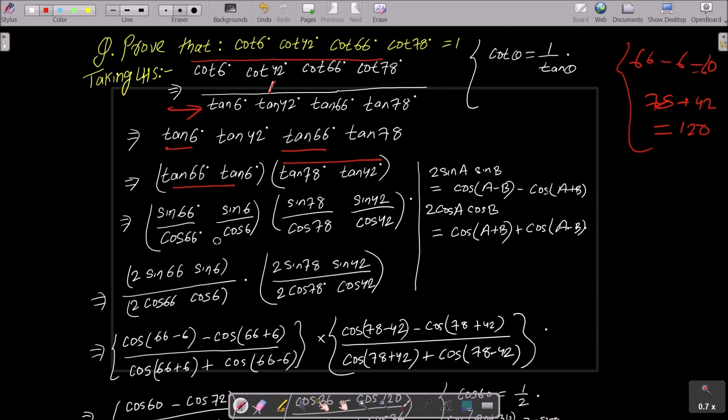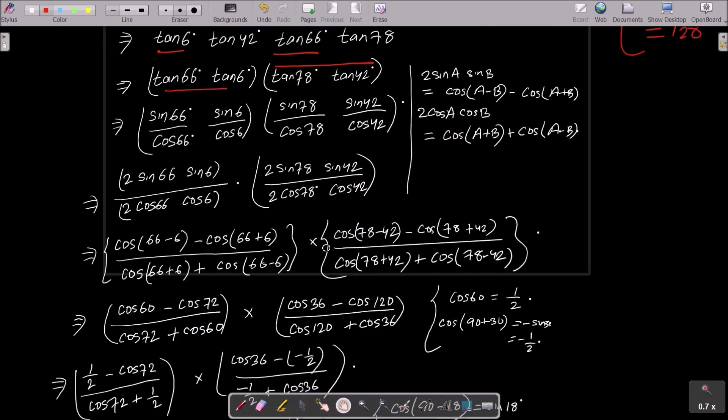After that, convert this into sin and cos form. Then in the numerator and denominator, multiply by 2. Then use here 2·sin(A)·sin(B), so this is the formula cos(A-B) minus cos(A+B), and 2·cos(A)·cos(B). Use this formula. Then after applying this formula, you can see cos(6°), cos(120°) form that I'm getting here.